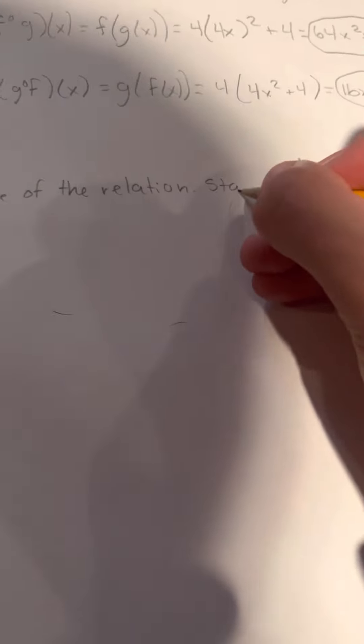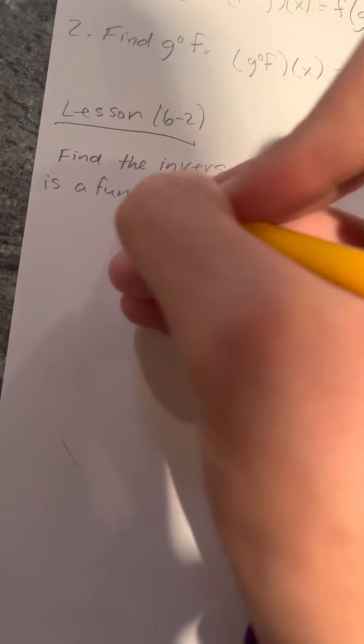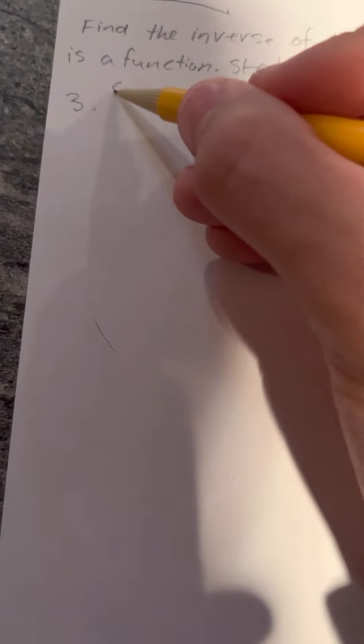Let's move on to lesson 6-2. Find the inverse of the relation, state whether the relation is a function, and state whether the inverse is a function. Problem number 3. The relation is: (4, 4), (2, -1), (3, 4).